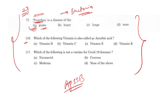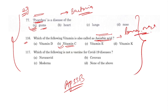The next question: which of the following vitamins is also called ascorbic acid — Vitamin D, Vitamin C, Vitamin E, or Vitamin K? Ascorbic acid is the chemical name of Vitamin C. It's also called ascorbic acid, and we find this vitamin in lemon, orange, and some other food substances.